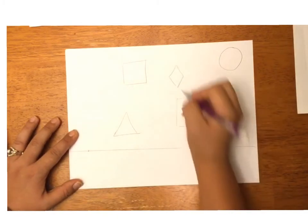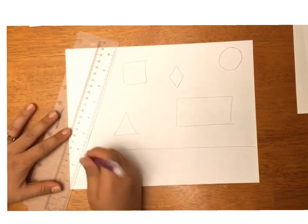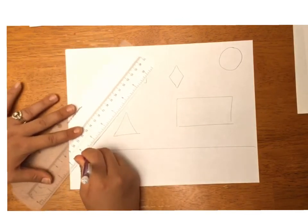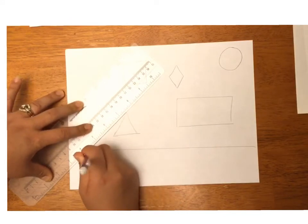There is my last shape. Now I'm going to take my ruler and start connecting the vanishing point to the corners of all the shapes. I'm going to start with the shape that is closest to the vanishing point, which is that triangle. I can connect all three points to the vanishing point.